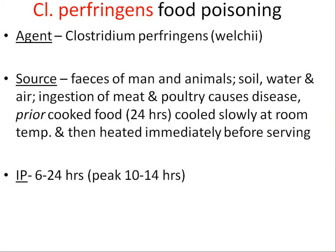Clostridium perfringens: the agent is Clostridium perfringens. Source: species of man and animals, soil, water, and air. Ingestion of meat and poultry causes the disease. Prior cooked food left 24 hours, cooled slowly at room temperature, and then reheated immediately before serving causes Clostridium perfringens food poisoning. We need to refrigerate cooked food especially in summers or pre-monsoon season, and heat it properly before eating the next day.